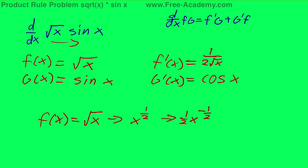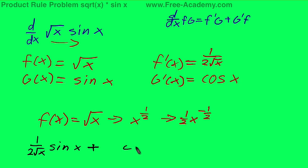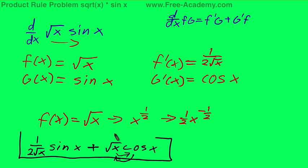Now that we have that, we can combine all our different components. f prime of x is one over two root x, times g of x which is sine of x, plus g prime of x which is cosine of x, times f of x which is square root of x. Notice I changed the order on these — not that it matters, I just think this looks a bit cleaner. And that is your derivative.